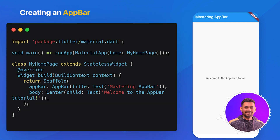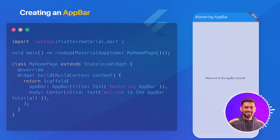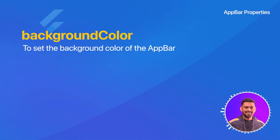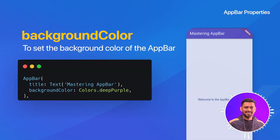Now that we've created the basic AppBar, let's dive into some of the most important properties and how they can help you build your app. BackgroundColor: the BackgroundColor property allows you to set the color of the AppBar. In this example, we have set the AppBar background color to purple.